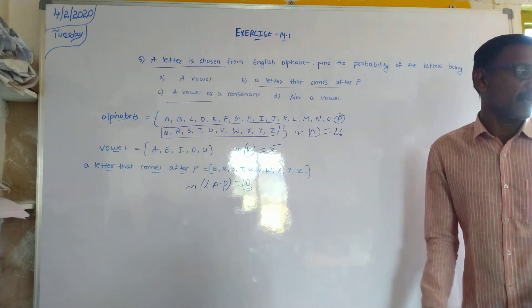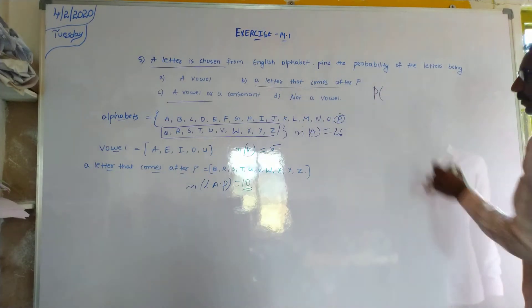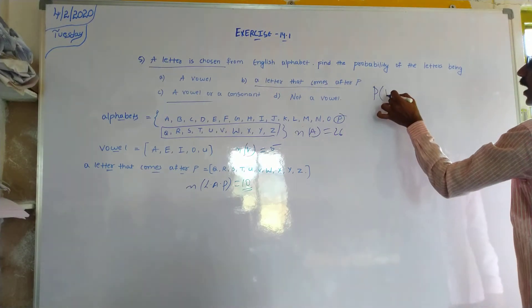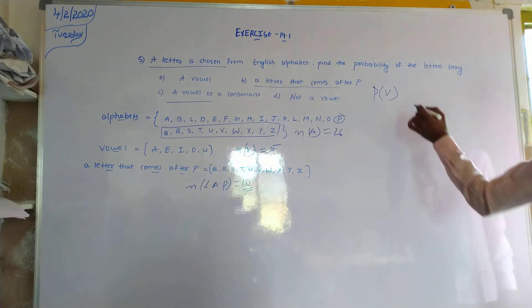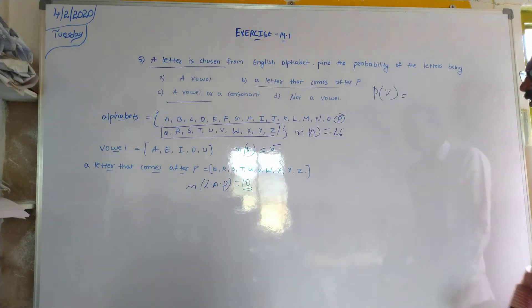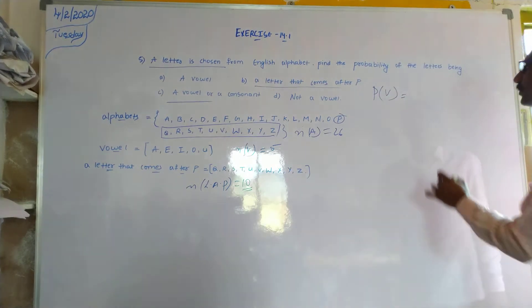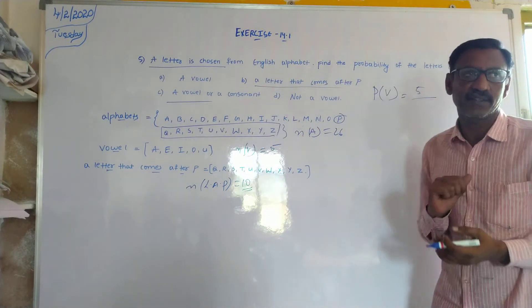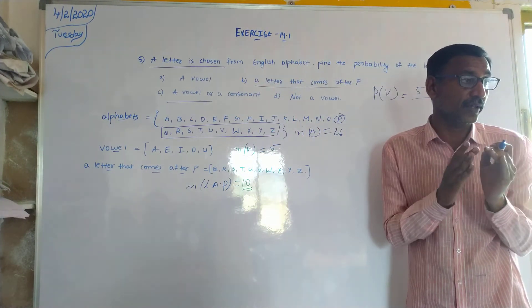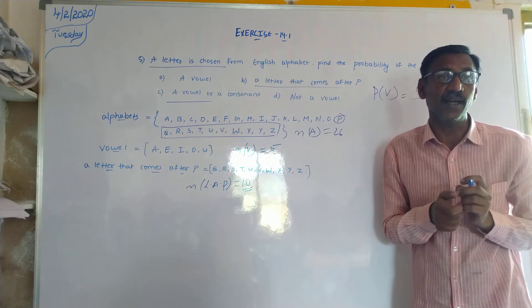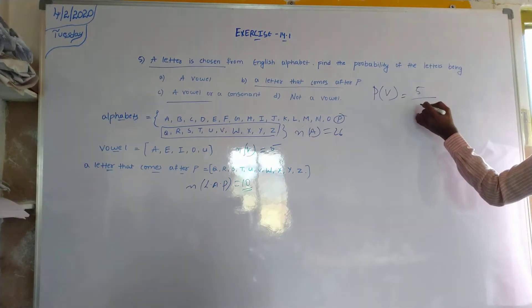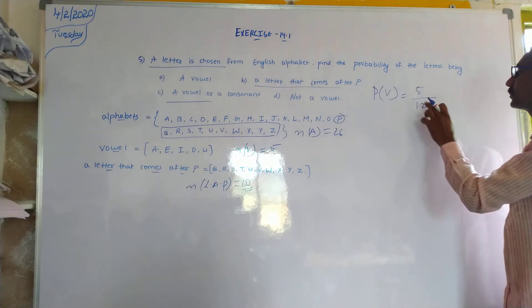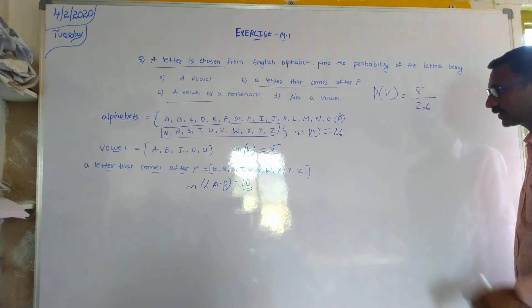P of, probability of, how many are there? Vowel. V stands for vowel. V equals to 5. Total, total, how many are there? 26. How many are there? 5. By total probability, total outcomes? Yes. Total outcomes? 26.